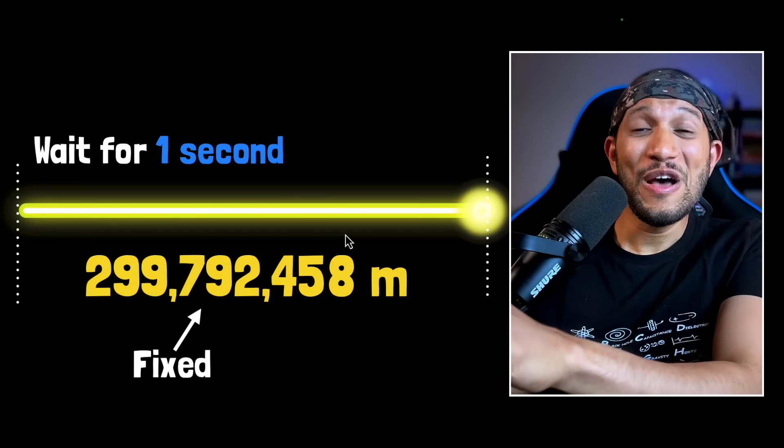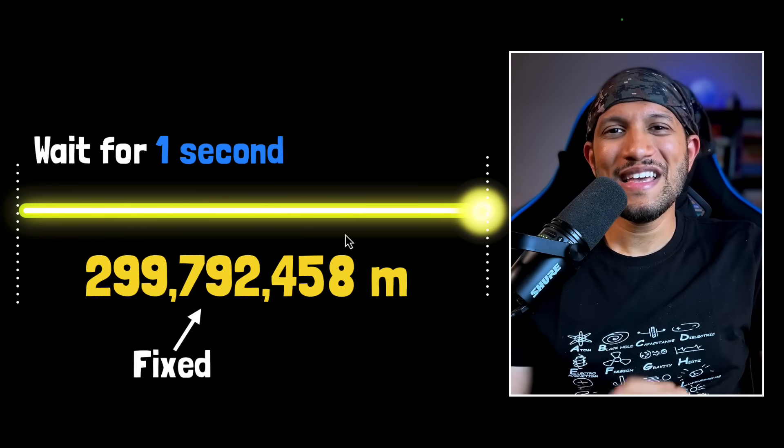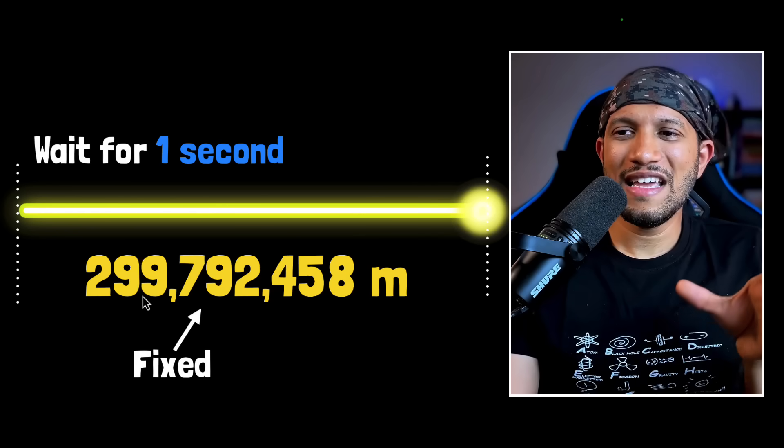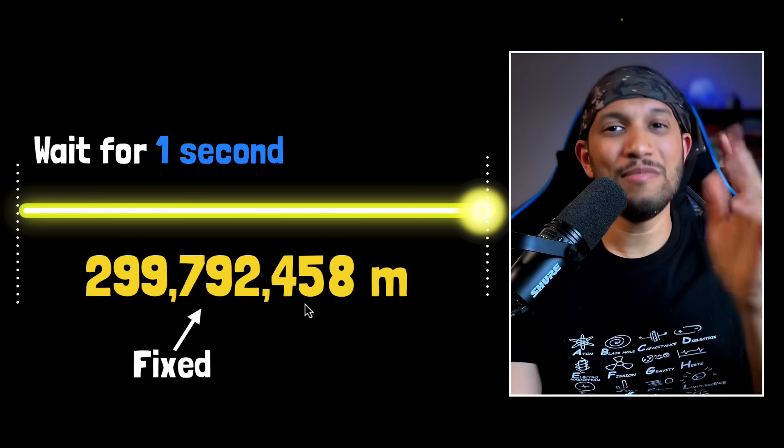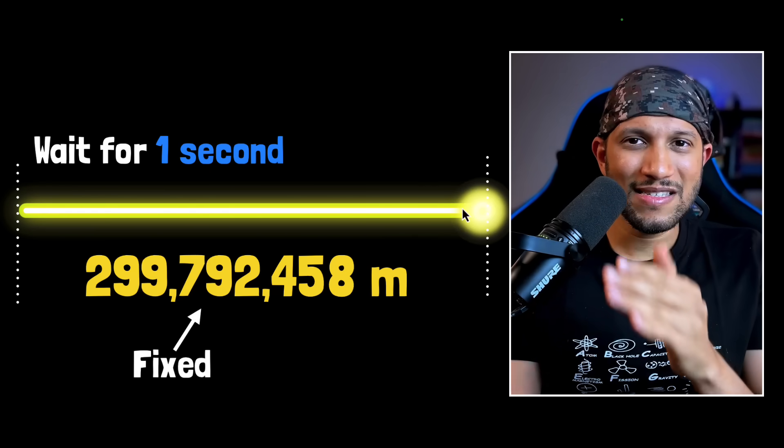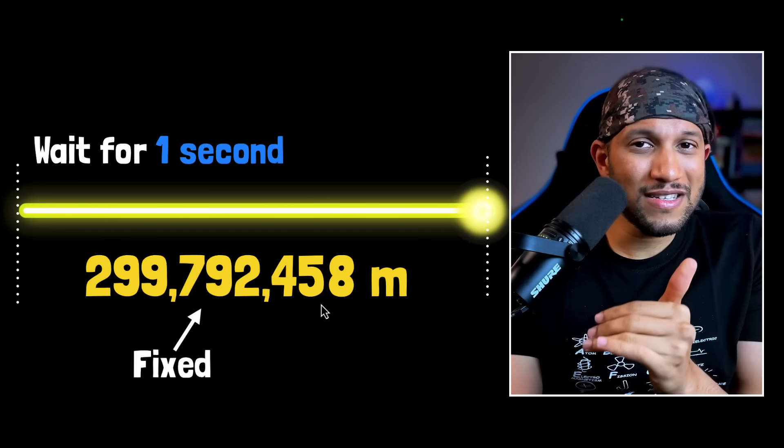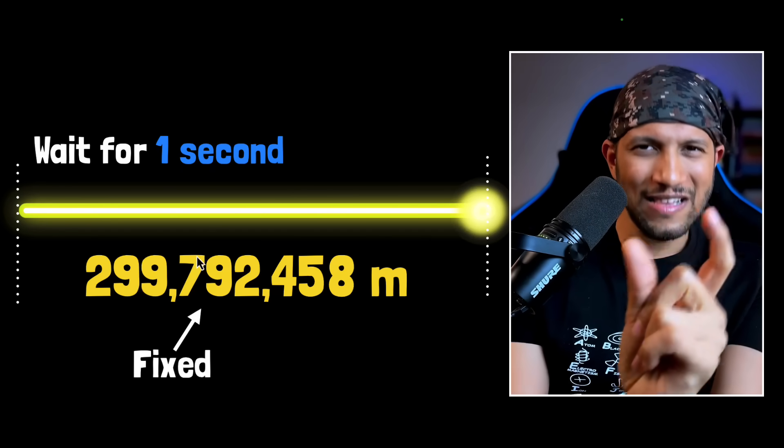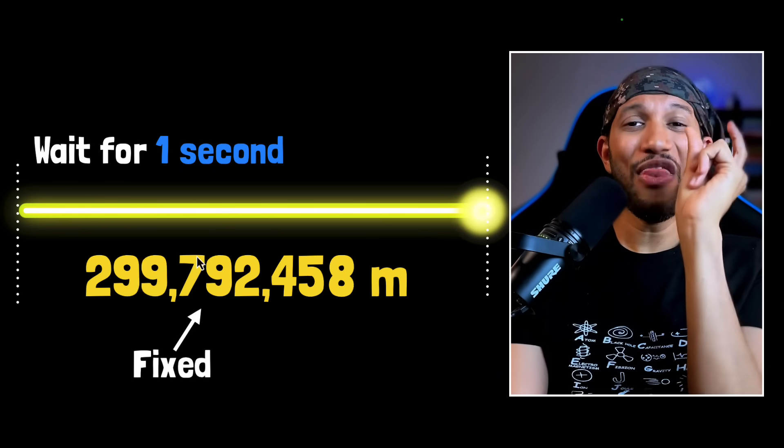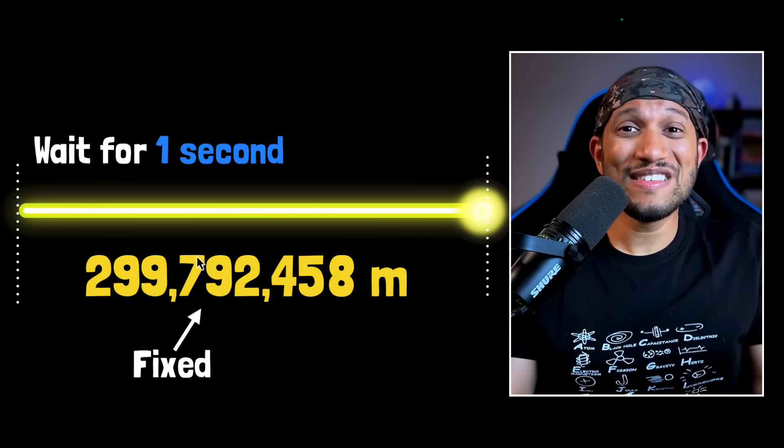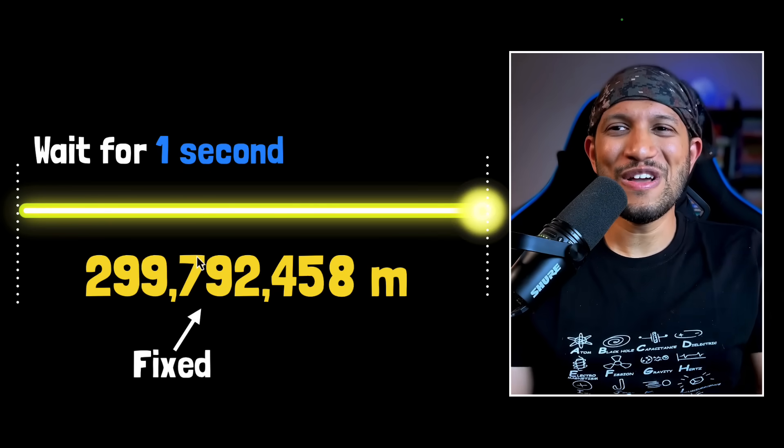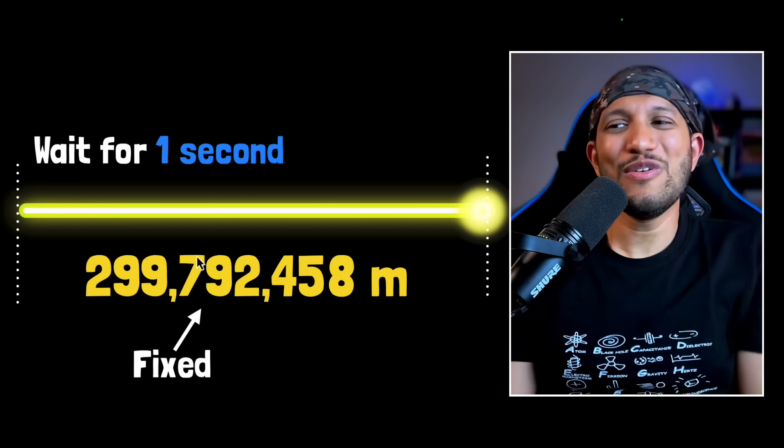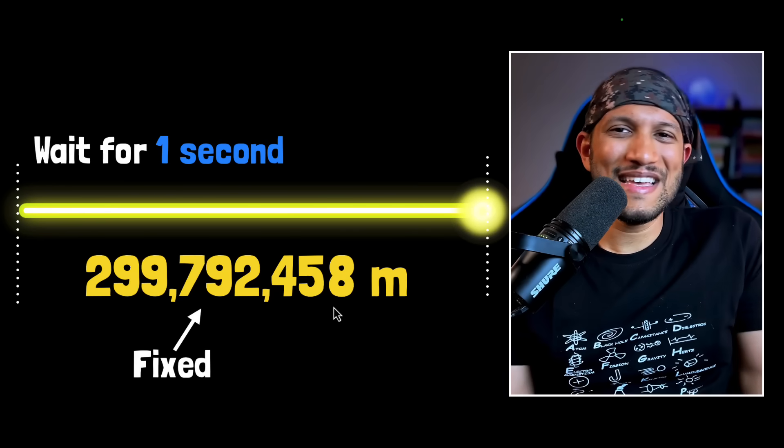This way. A precise way of thinking about what a meter is is that we would say that, hey, if you wait for one second, whatever distance light travels, by definition, it is 299,792,458 meters, which means you take that distance, divide it into so many parts, and then each part is exactly one meter. That's the current definition of the meter. That is the System International definition of the meter today. So since the meter is defined using the speed of light, the speed of light is exact.